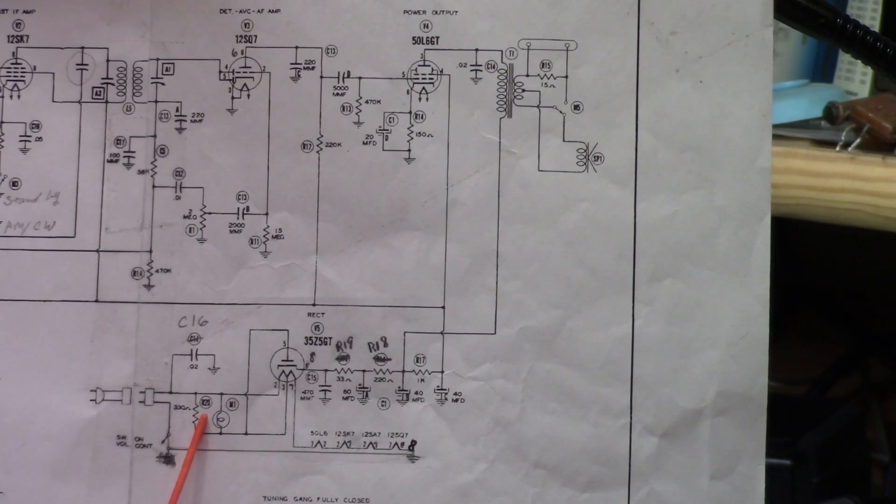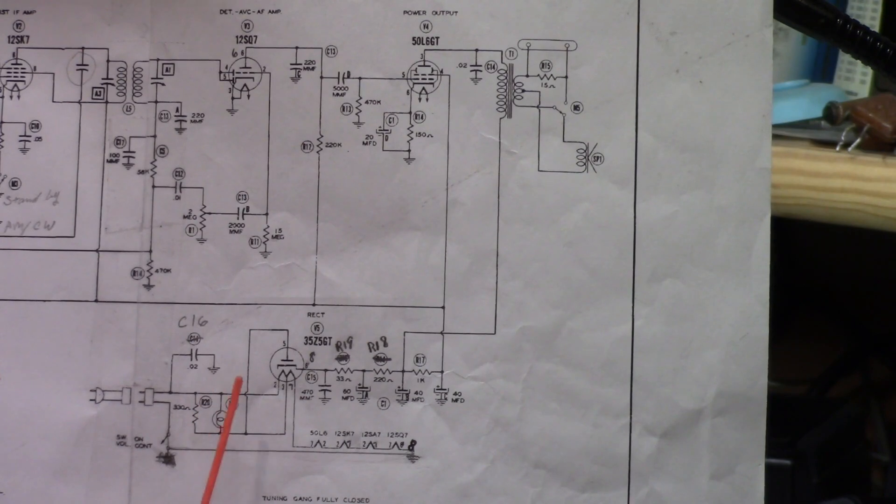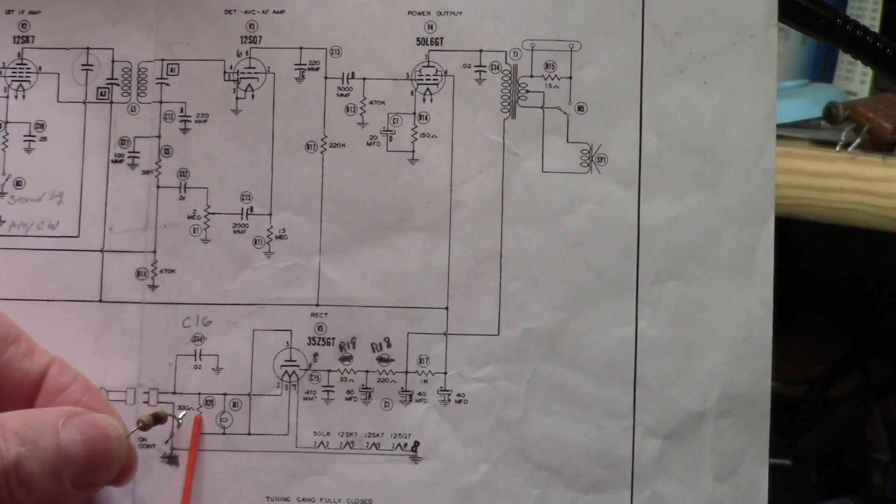It took me a while to figure out where this connection right here was. Because the resistor that got cooked was actually this one right here. And I knew where that one went. It went from pin 2 up to pin 5. And this bulb, the same thing. Both of these are across pins 2 and pin 3. This is my poor dial pilot bulb.